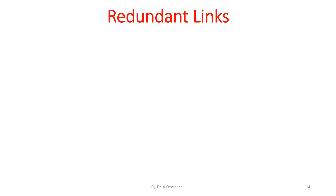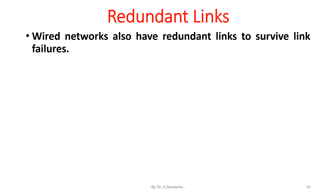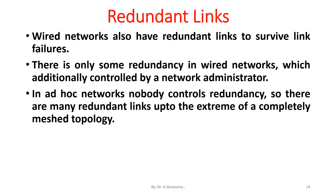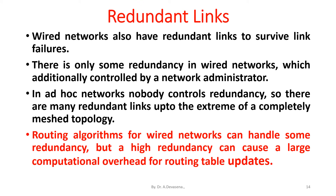The next difference is redundant links. Wired networks also have redundant links to survive link failures, but there is only some redundancy in wired networks, which is additionally controlled by a network administrator. In ad hoc networks, nobody controls redundancy, so there are many redundant links up to the extreme of a completely meshed topology. Routing algorithms for wired networks can handle some redundancy, but high redundancy can cause a large computational overhead for routing table updates.